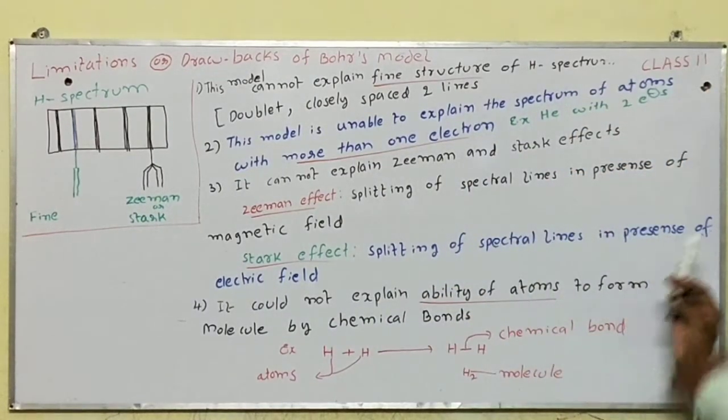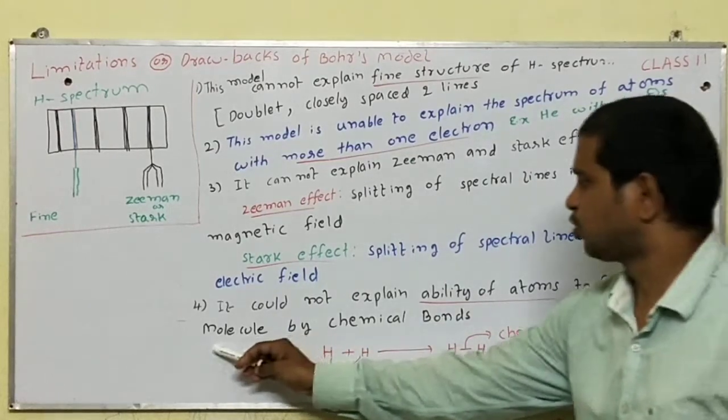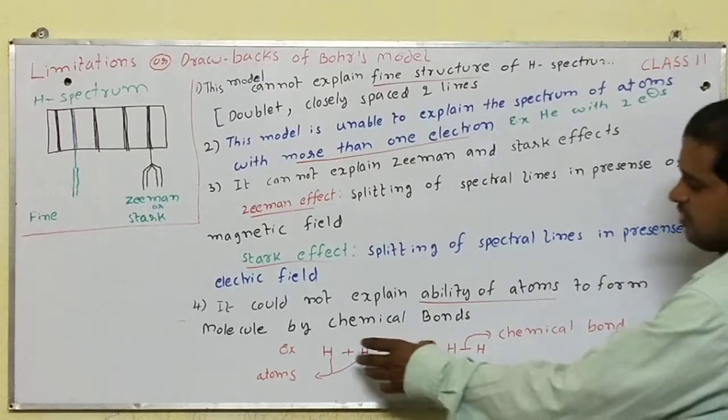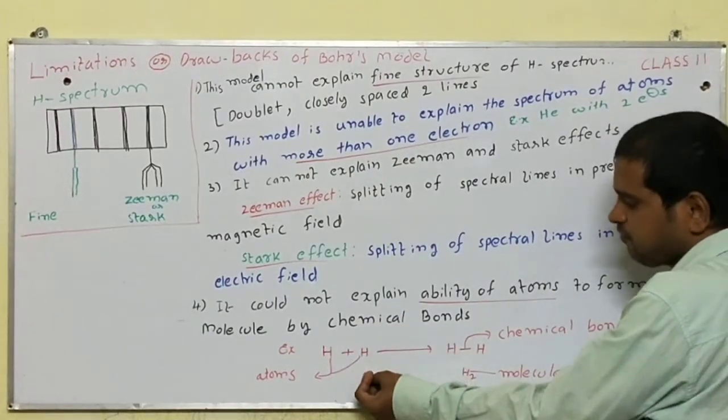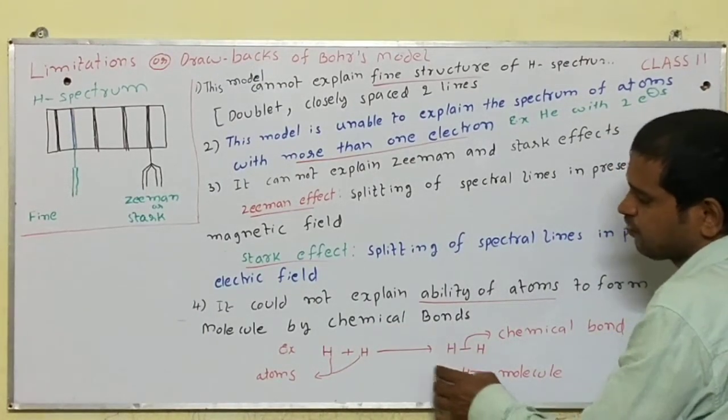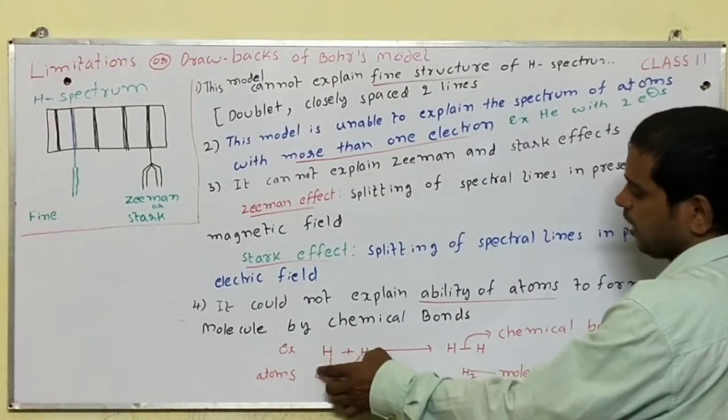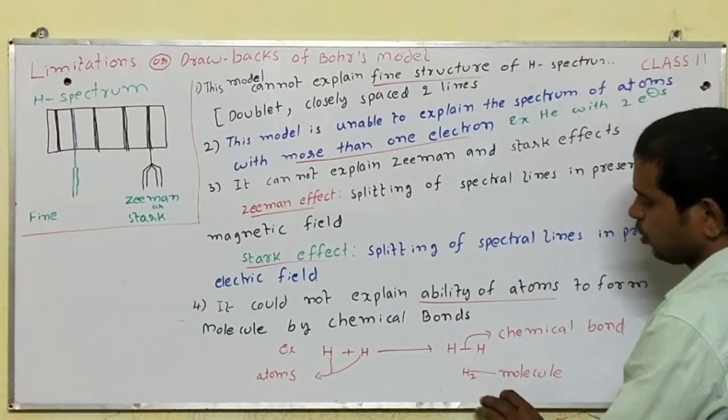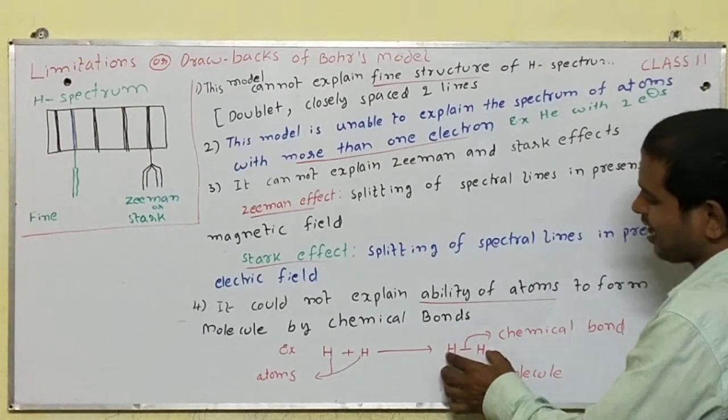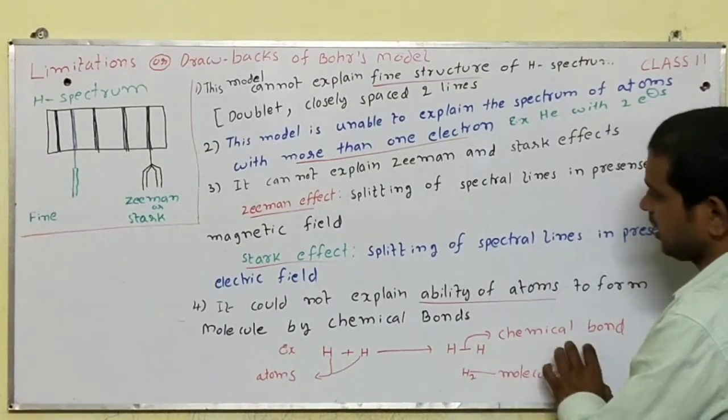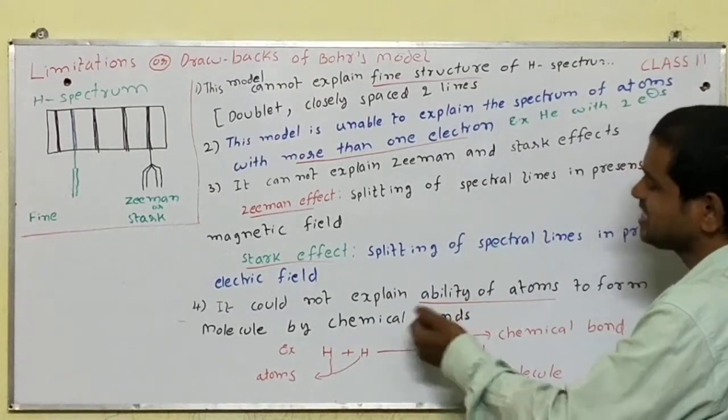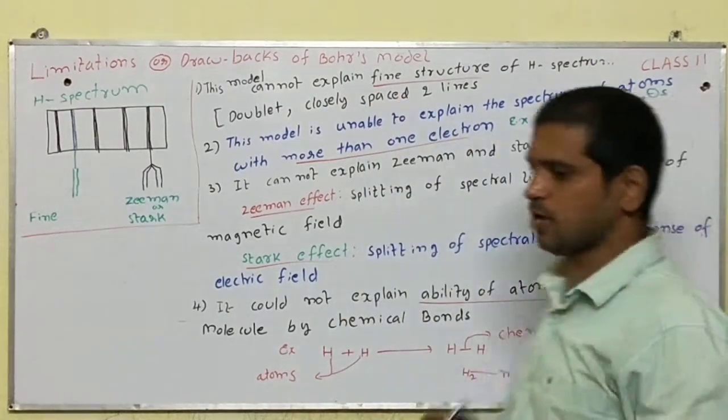This model could not explain the ability of atoms to form molecules by chemical bonding. Take the example of formation of hydrogen molecule from hydrogen atoms. These 2 hydrogen atoms combine to give H2 molecule bonded with chemical bonding. The ability of atoms to form chemical bonds is not explained through Bohr's model.